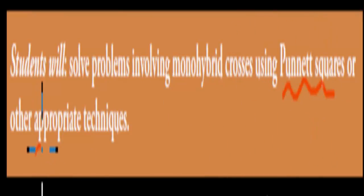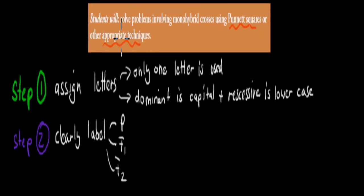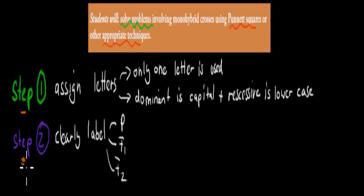In the last video we talked about dominant and recessive alleles and compared and distinguished between the two. We're going to cover the next dot point: solve problems involving crossing using Punnett squares or appropriate techniques. We're going to go over two different techniques — Punnett squares and the branch diagram.